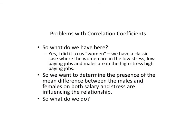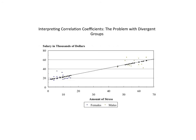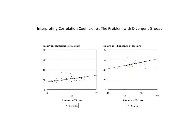We want to determine if a mean difference exists between the presence of males and females. If the researcher thinks divergent groups exist, they should run a t-test and determine if the groups differ significantly on either variable. If there is a significant difference, then the researcher should calculate two separate correlations — one for females on the left and one for males on the right.